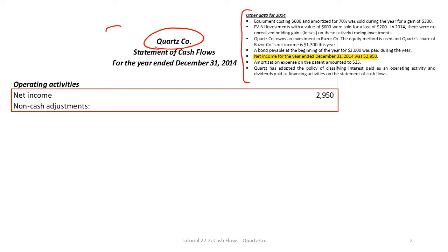When we first prepare our statement we begin with the title. The proper title is: Quartz Company, Statement of Cash Flows, for the year ended December 31st, 2014. 'For the year ended' is very important — just like the income statement, it covers a period of time. Do not use 'as at,' because 'as at' is at a point in time and is used for the balance sheet.